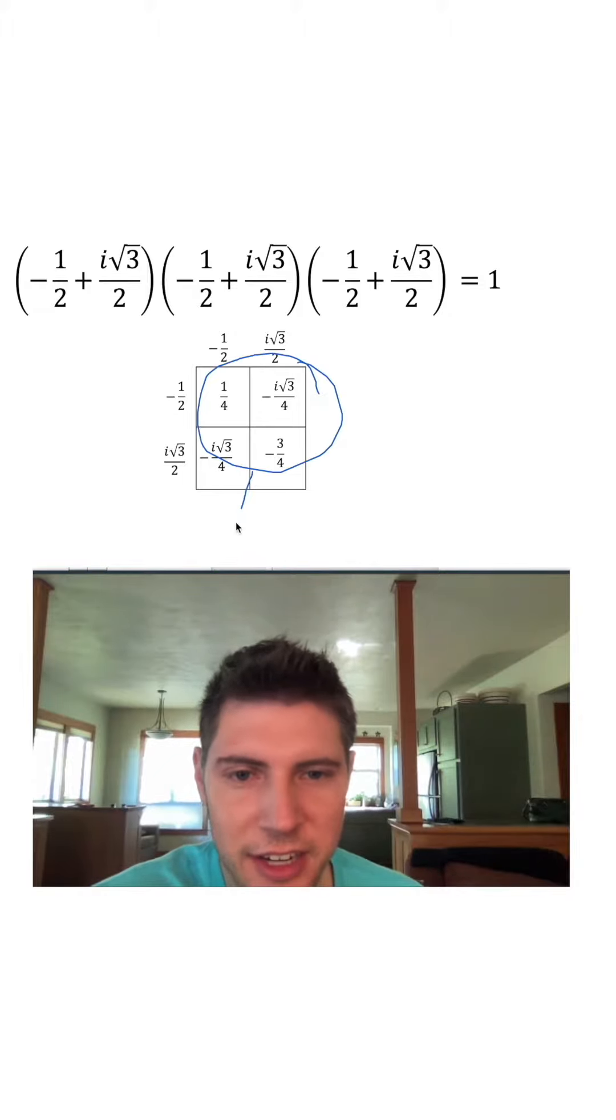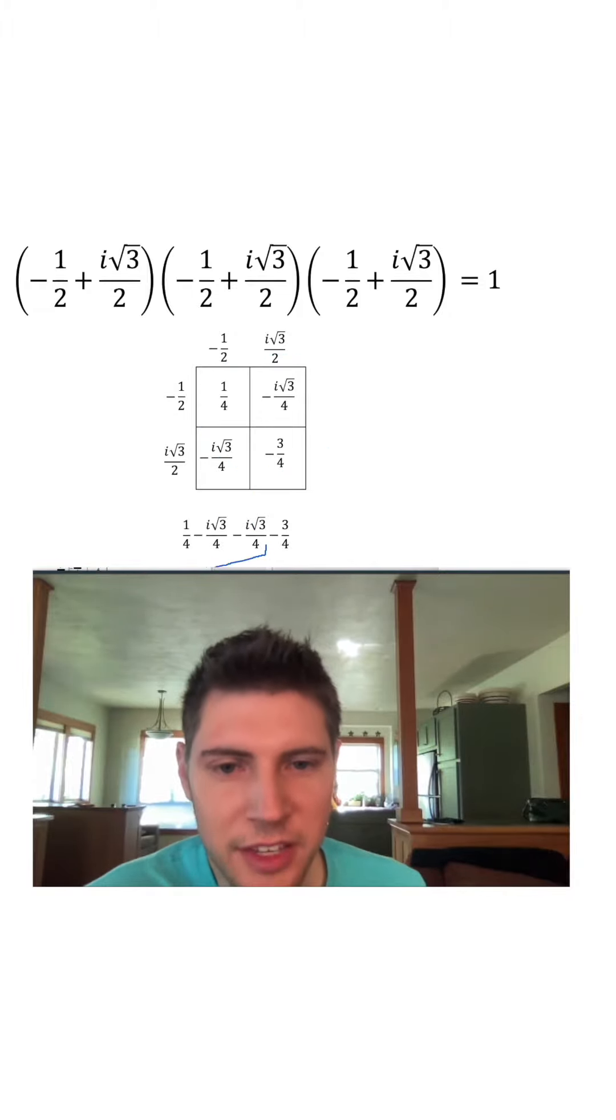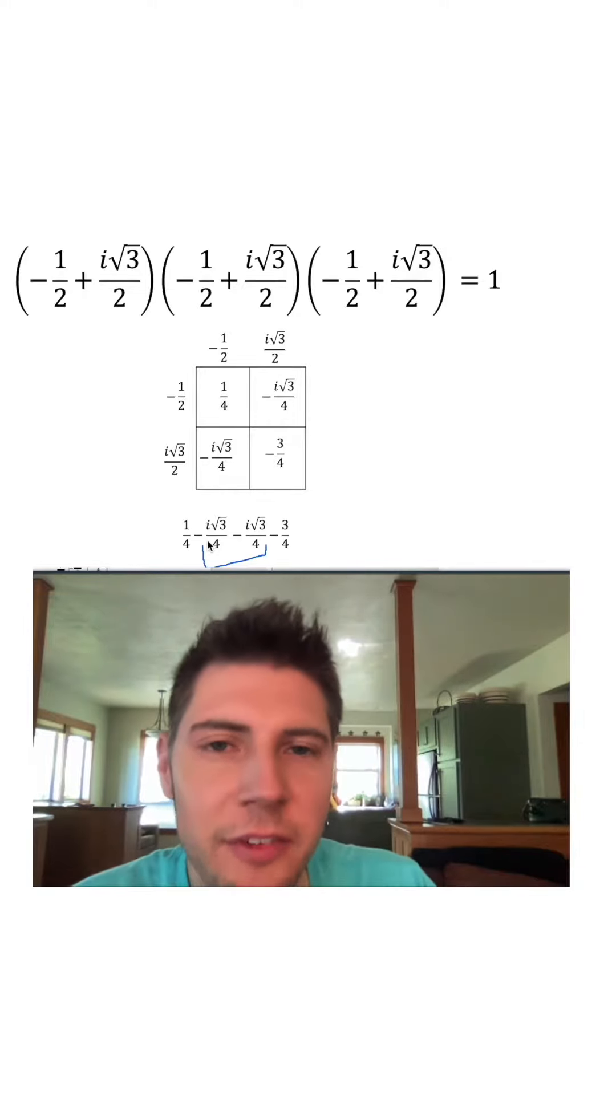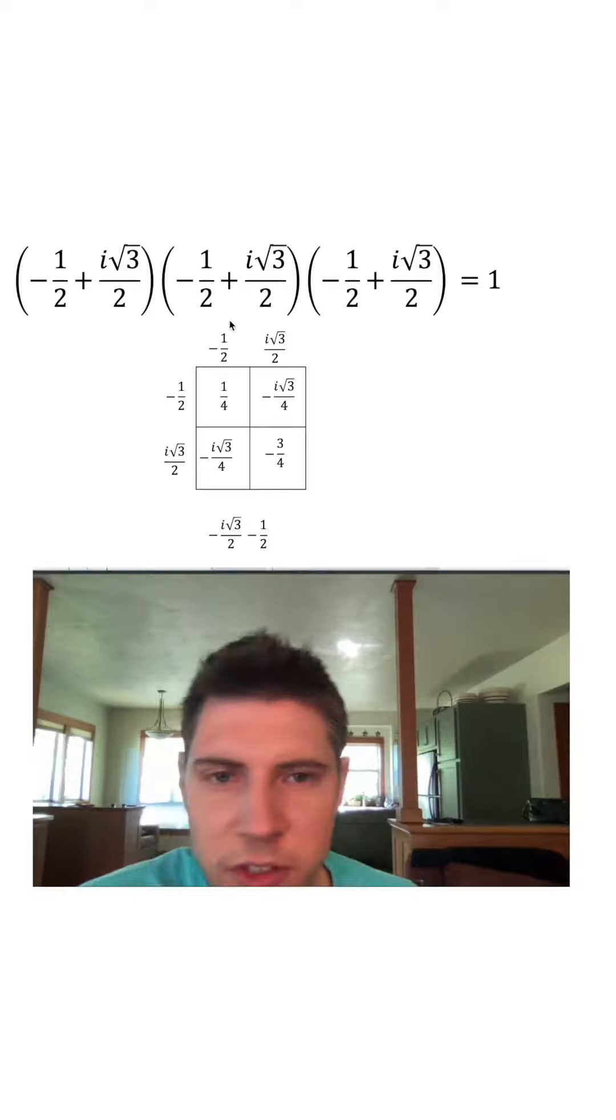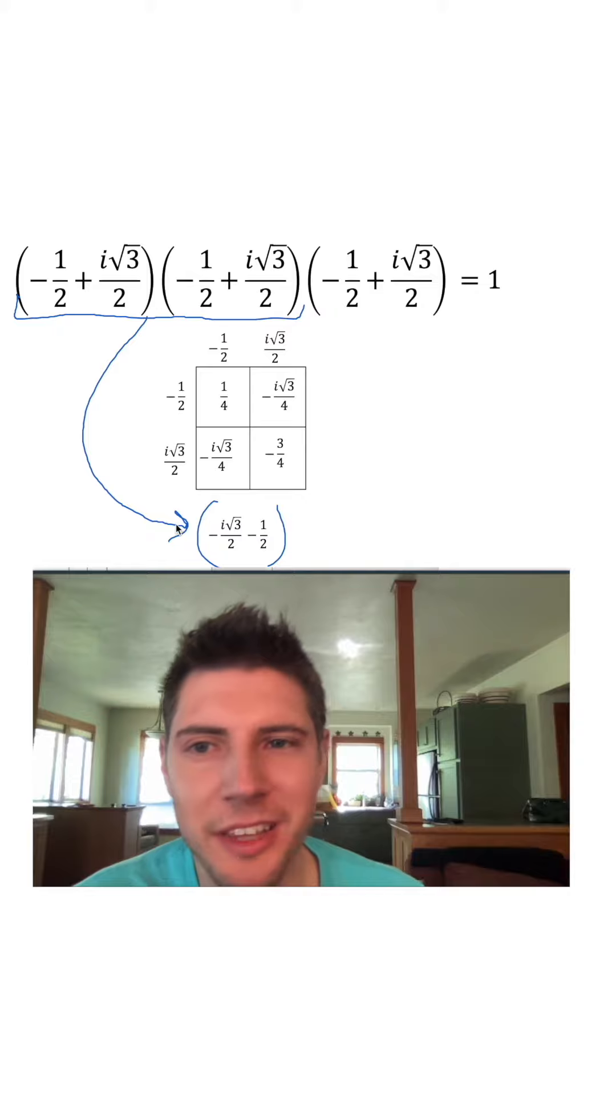So if we pull all this stuff on the inside and add it all up, and if we combine these two, we end up getting negative i root three over two. And then one-fourth minus three-fourths is negative one-half. So now all of this, when multiplied, changes into this right here. We can update that.